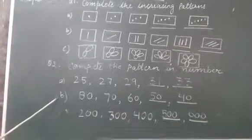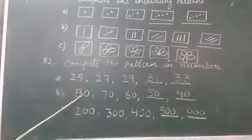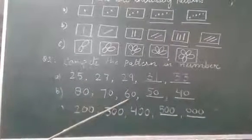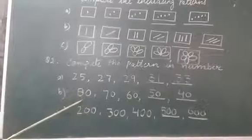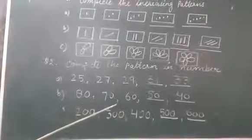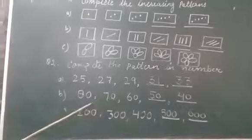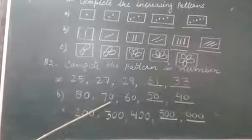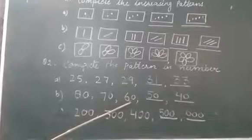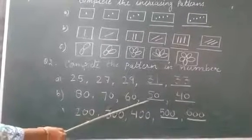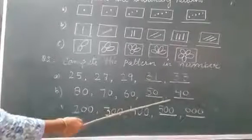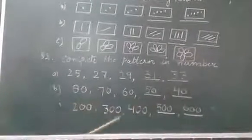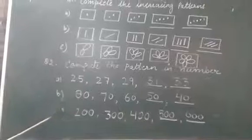Solve next question. 80, 70, 60. Observe the pattern. Yes. Decreasing 10, 10. That means minus 10. 80 minus 10, 70. 70 minus 10, 60. So, what number should be there? Minus 10. 60 minus 10, 50. 50 minus 10, 40.